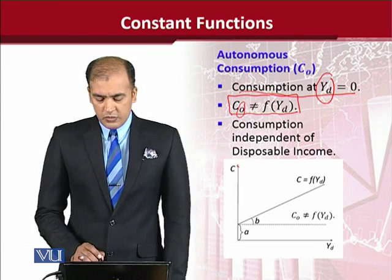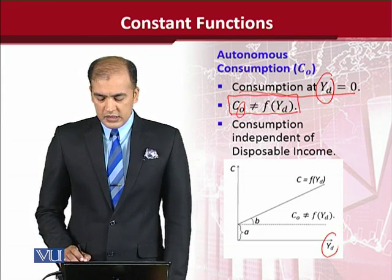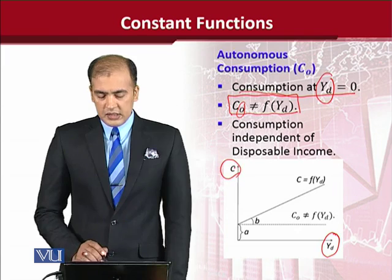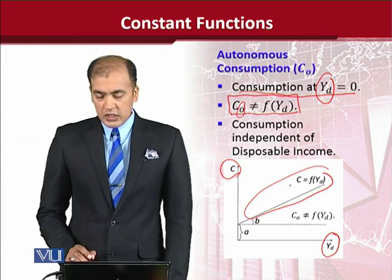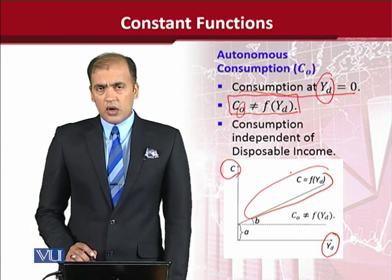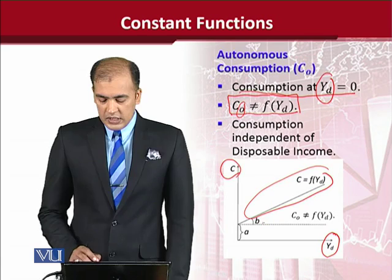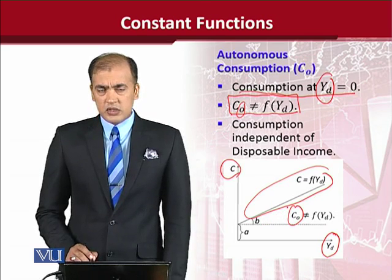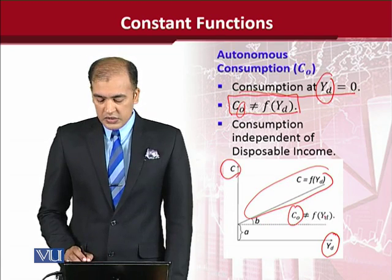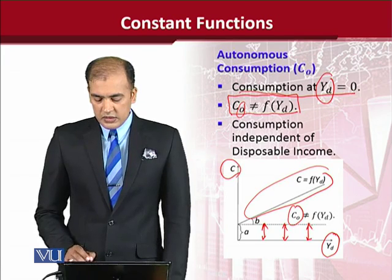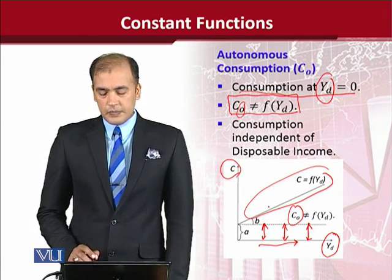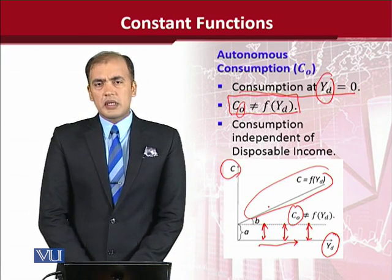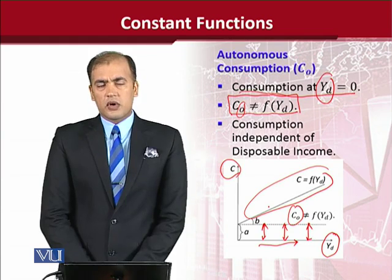I have plotted the diagram. On the x-axis there is yd, and on the y-axis there is the dependent variable c. There is a part of consumption dependent on income, as studied in Keynes' law of consumption. However, autonomous consumption is not a function of yd — that is the reason it does not change whatsoever, regardless of the value of yd. This is how autonomous consumption falls in the category of constant functions.